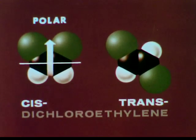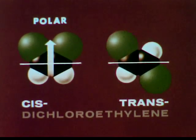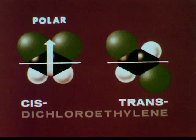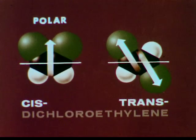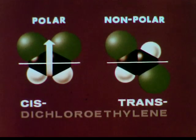In the trans-dichloroethylene, the chlorine atoms are on opposite sides of the bond, so the positions of the chlorine atoms create opposing dipoles, which cancel one another. Therefore, the trans molecule should be non-polar.